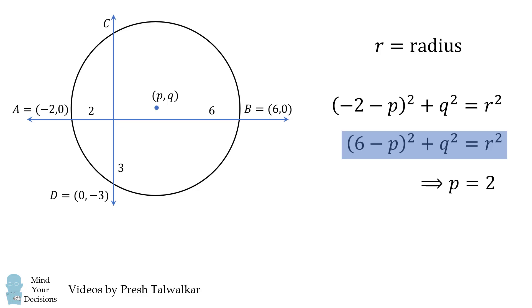We can then substitute this back into one of the equations, so we get another equation that 4 squared plus q squared is equal to r squared.